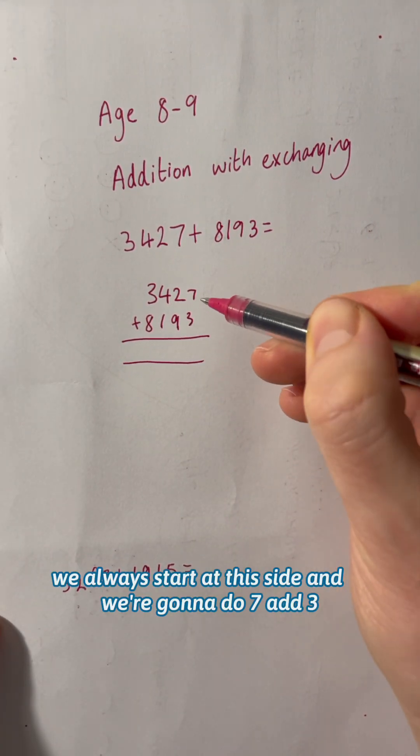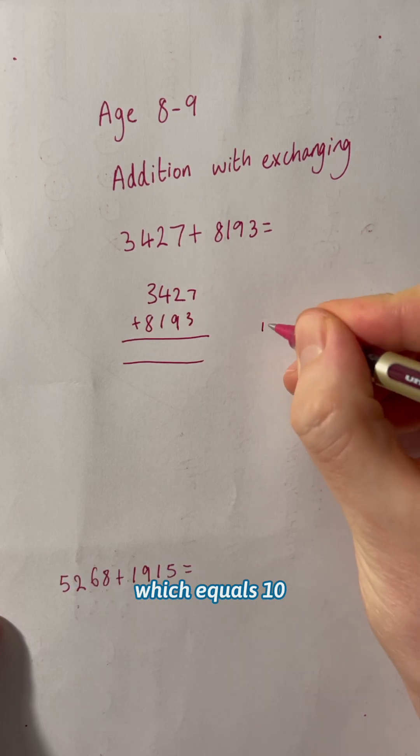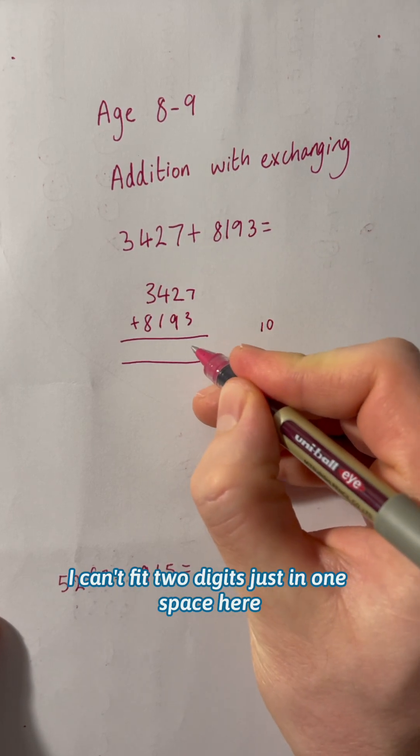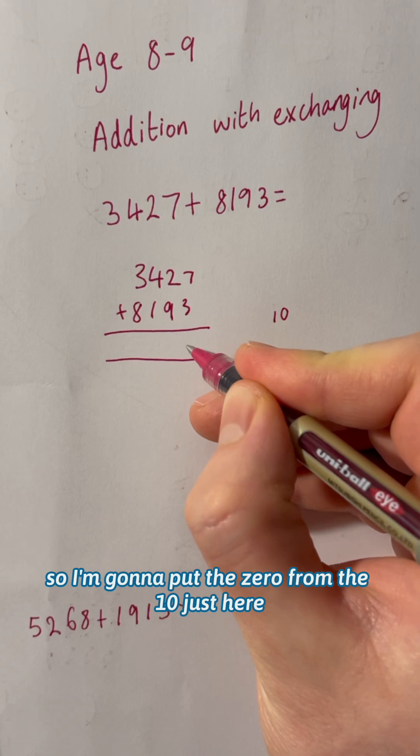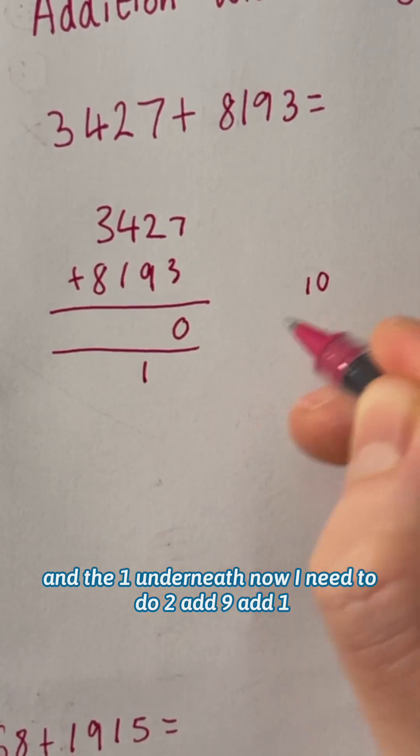We always start at this side and we're going to do seven plus three which equals 10. I can't fit two digits just in one space here. So I'm going to put the zero from the 10 just here and the one underneath.